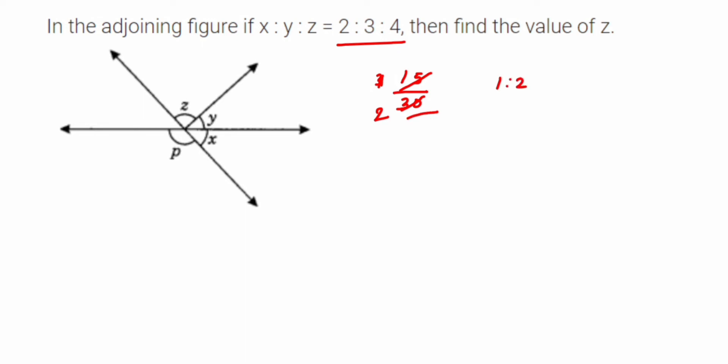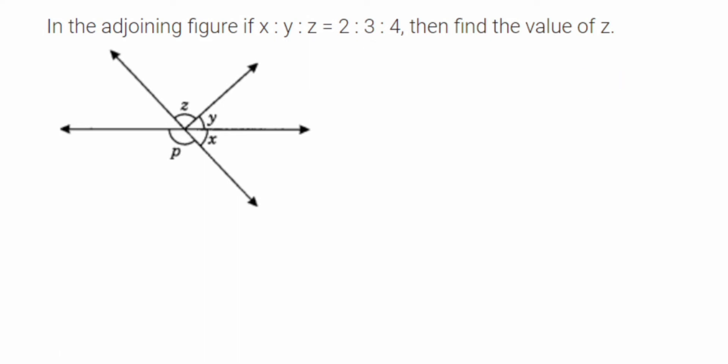Ratios are always given in the lowest form, so there is always a common factor by which we cancel them. If the number cannot be reduced further, the common factor will be 1. For example, 3 to 4 cannot be reduced. That is why we take a variable like 'a' — we don't know by what number we're reducing it.